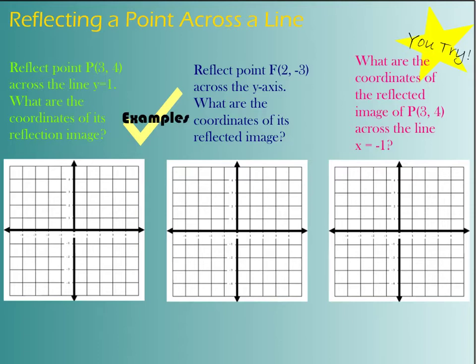So let's look at a couple examples. The first thing we're going to do is look at just how to reflect a single point over a line. So I'm going to plot this point 3, 4. And here I'm going to reflect over the line Y equals 1, which is this line right here, Y equals 1. So that's my line of reflection.